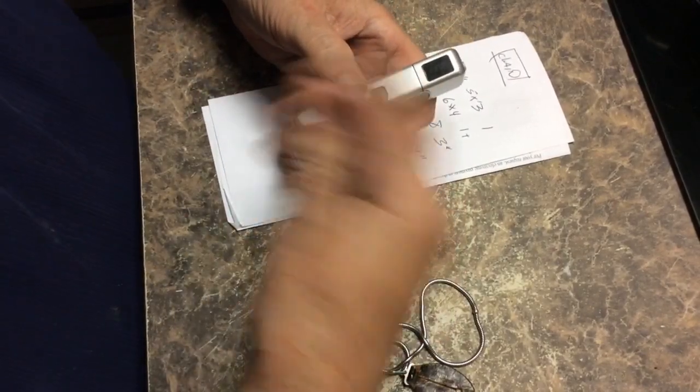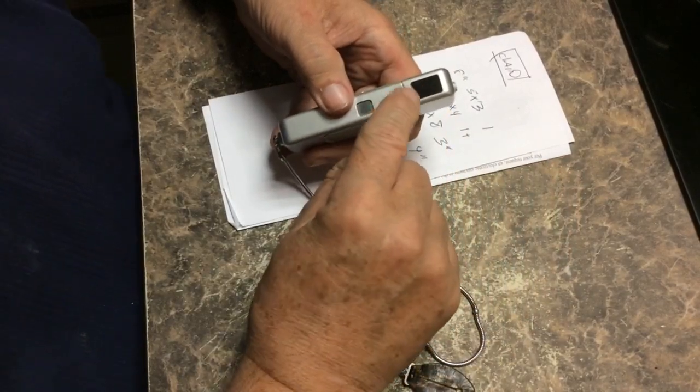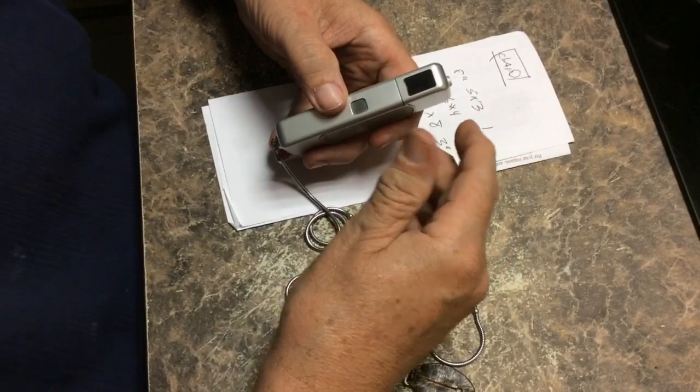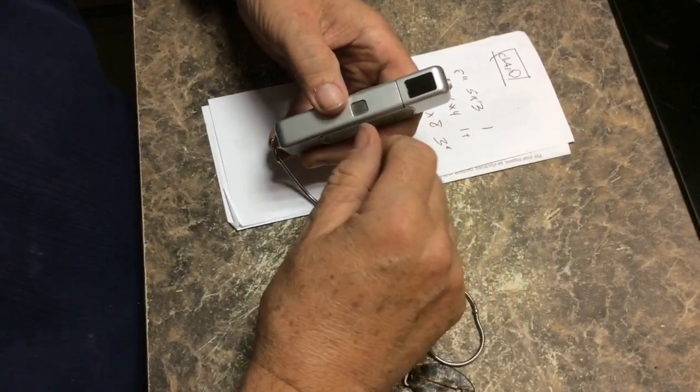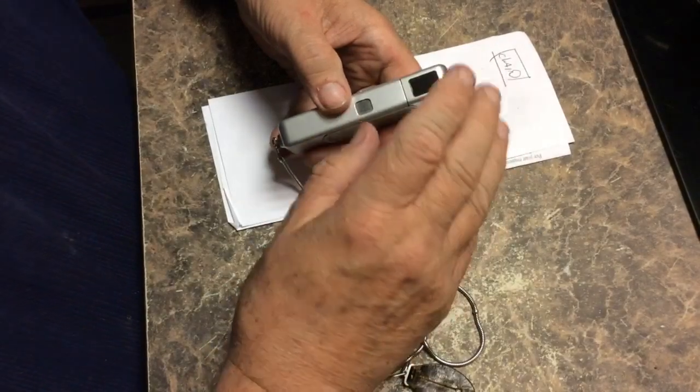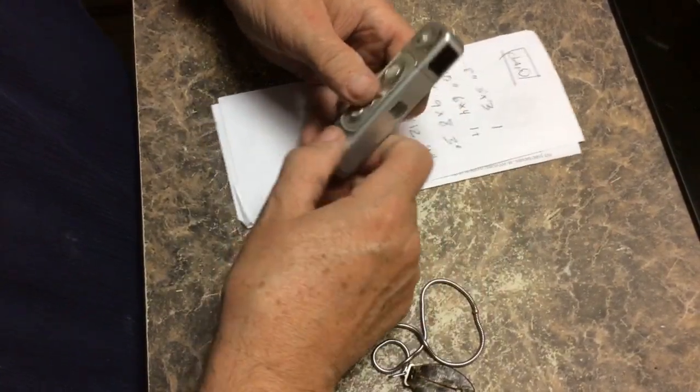The only problem with these cameras is they age. These cells become less sensitive, especially if they've been sitting out as a display item. The photo cells tend not to be working as well. It's better if you find one that would have been stored in the dark.